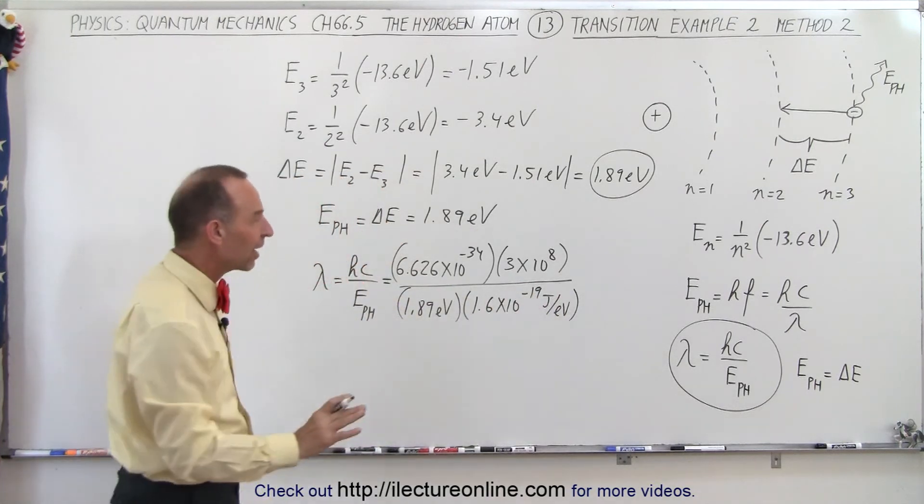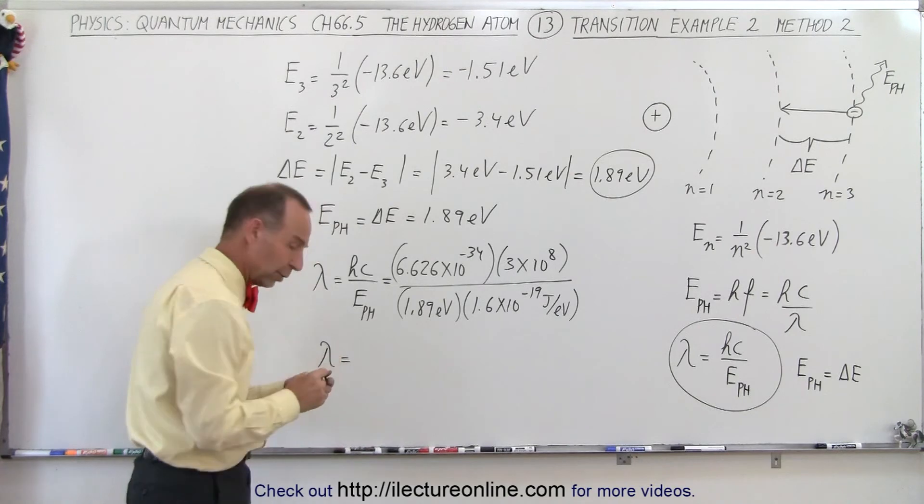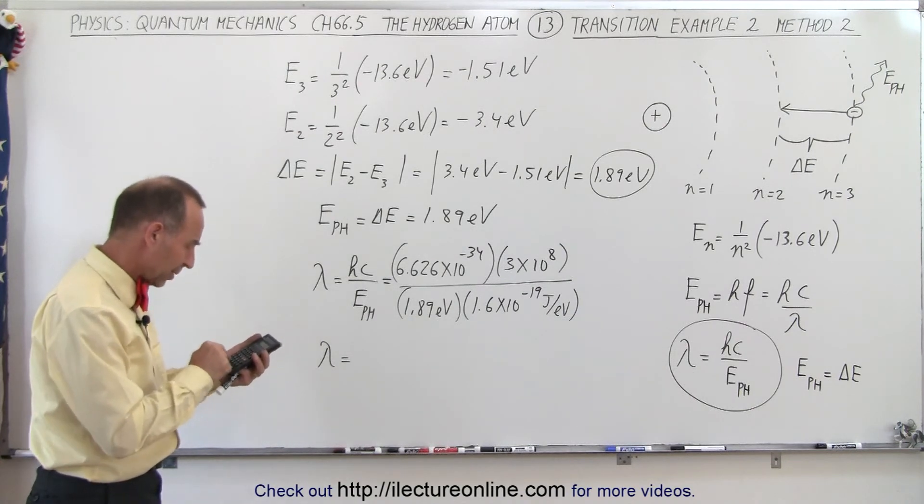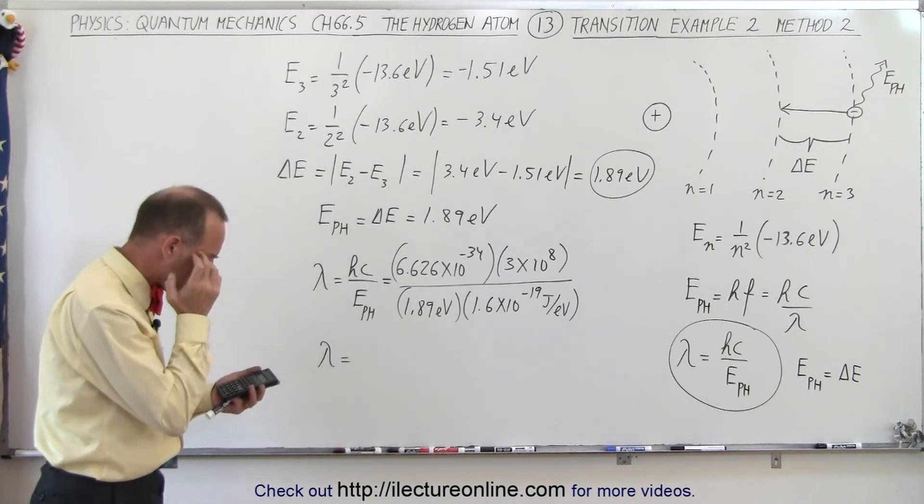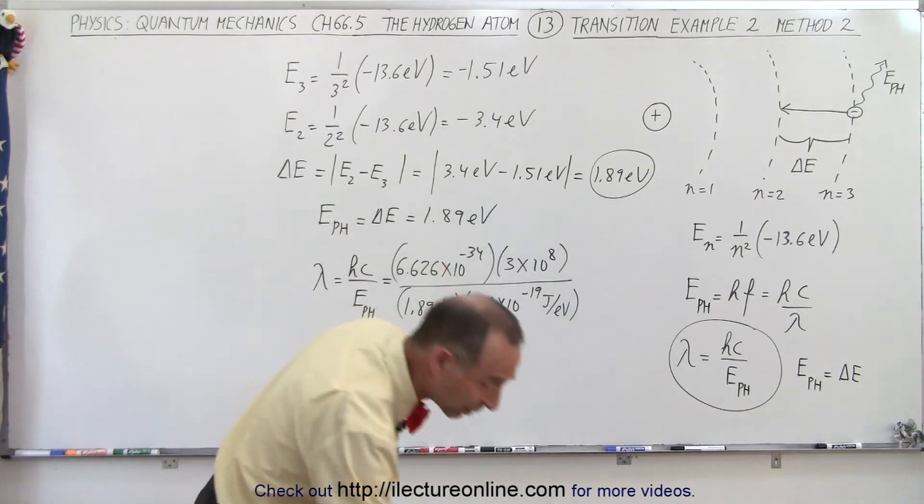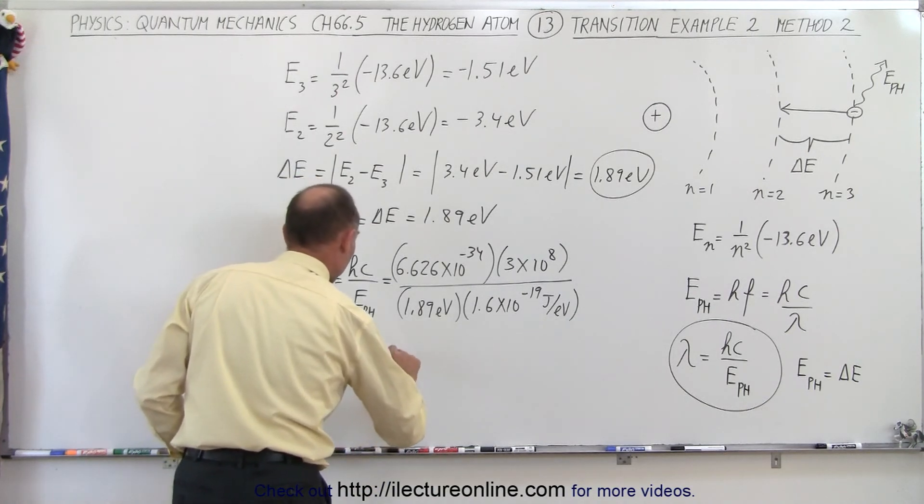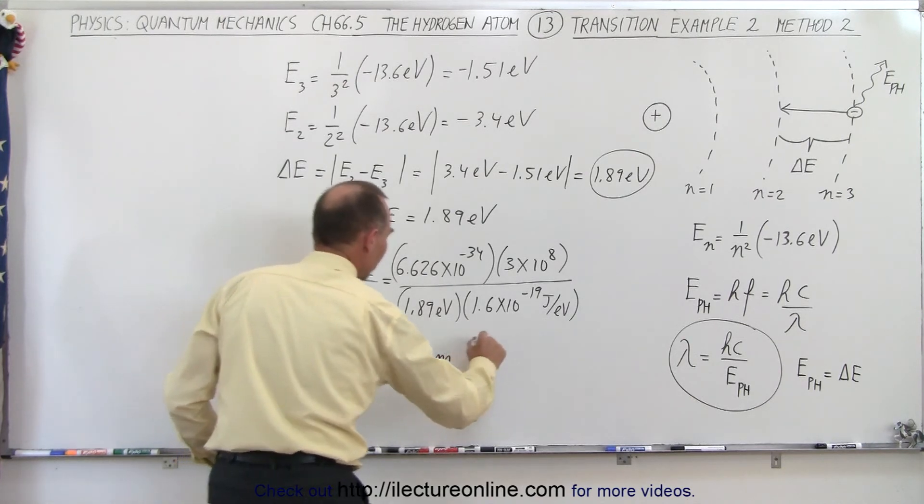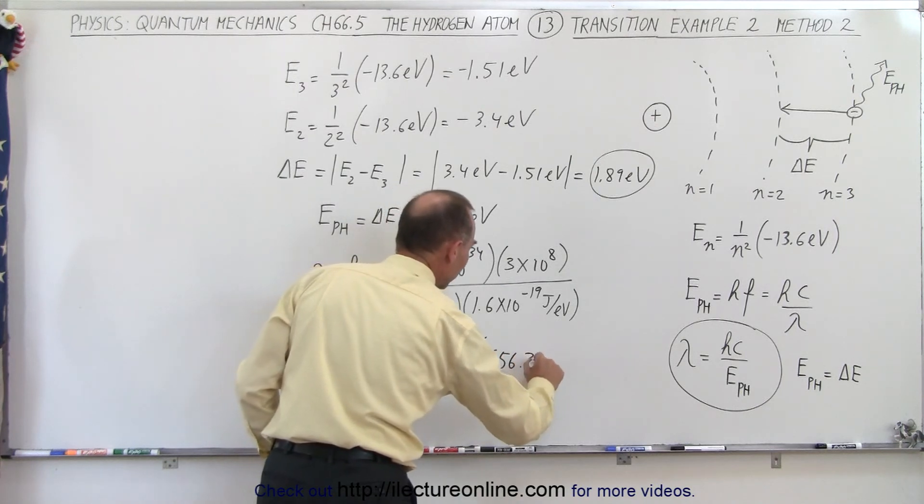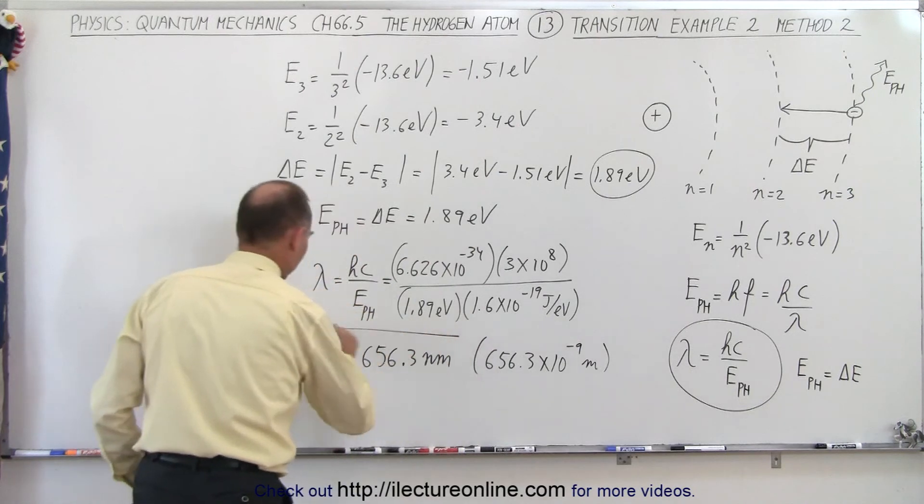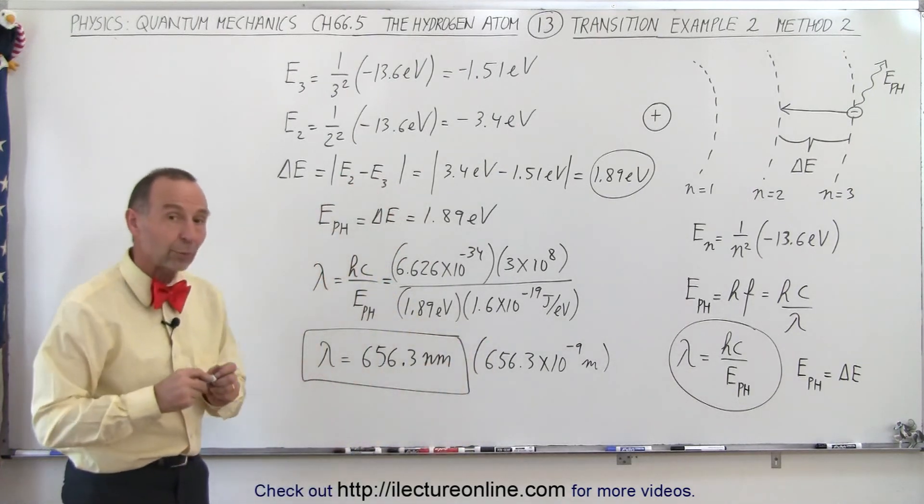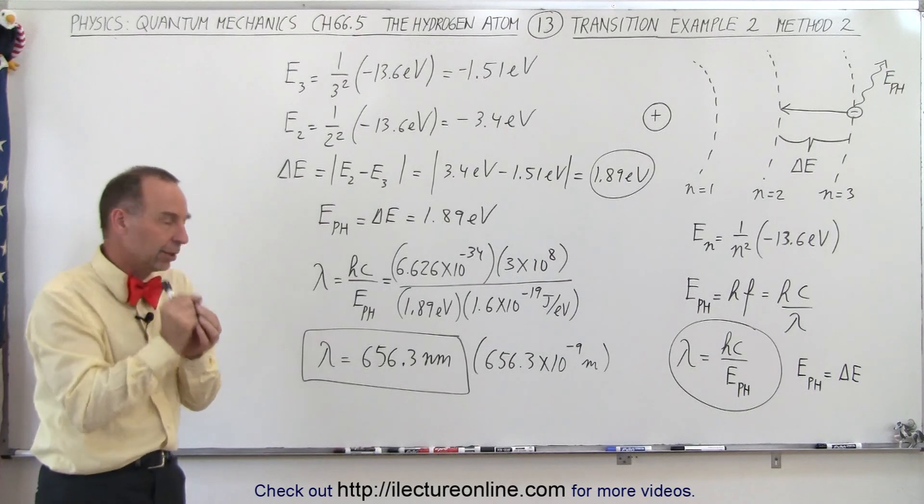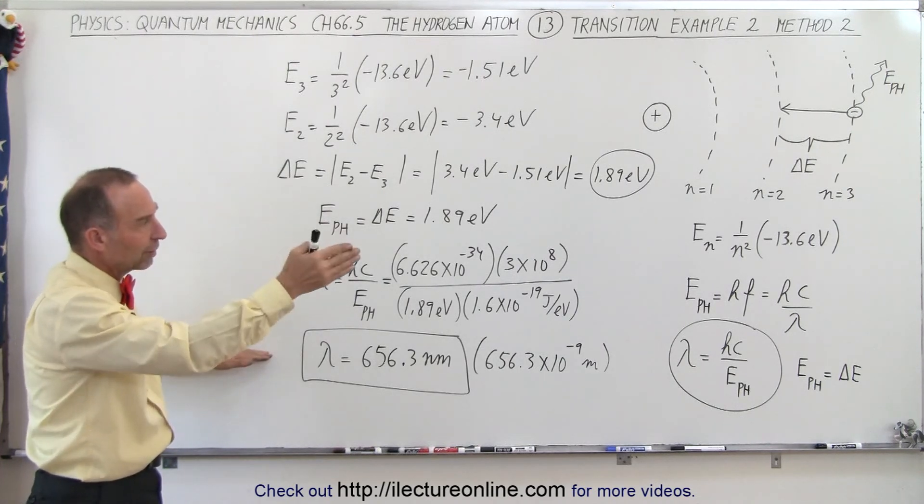Now we're not going to get the exact value because we have some round-off errors, but at least it shows you how to do it correctly. The result is 657.3, however the exact value without the round-off error should have been 656.3 nanometers, which is 656.3 times 10 to the minus 9 meters. That's a wavelength associated with red light. When you look at hydrogen gas and there are electron transitions, we will indeed see the red color of the jumps from electrons that go from the third level down to the second level.